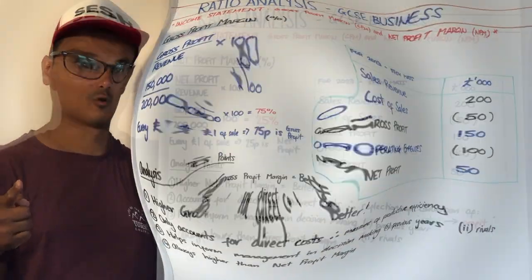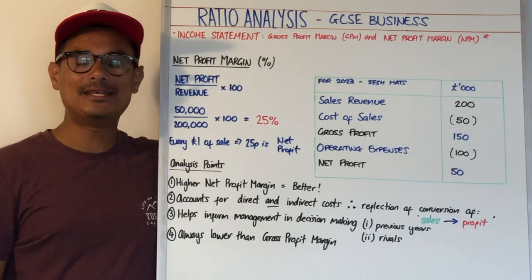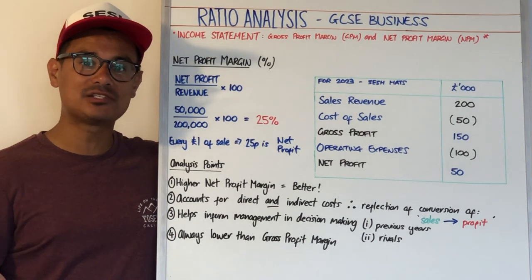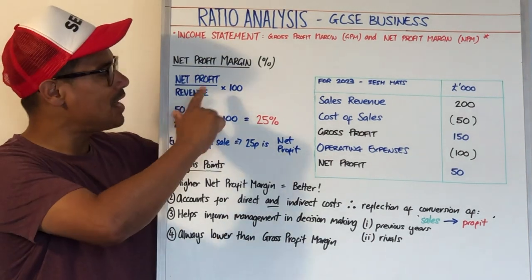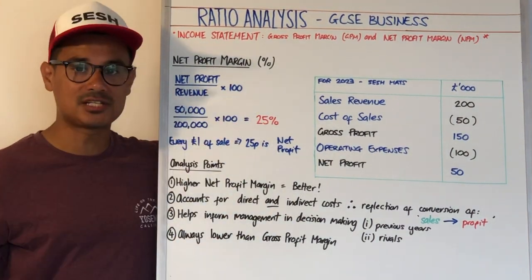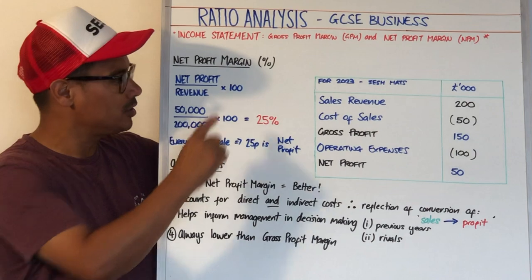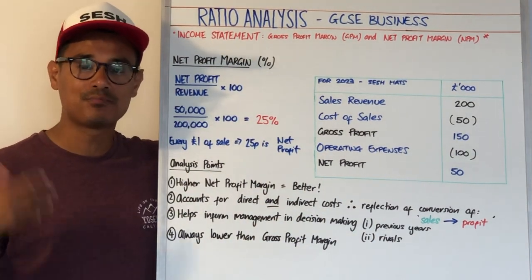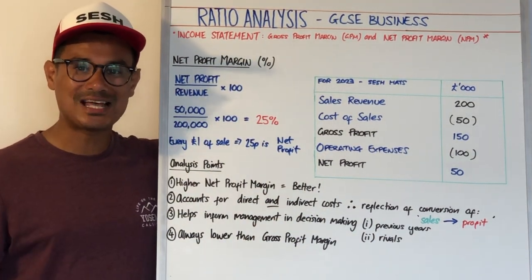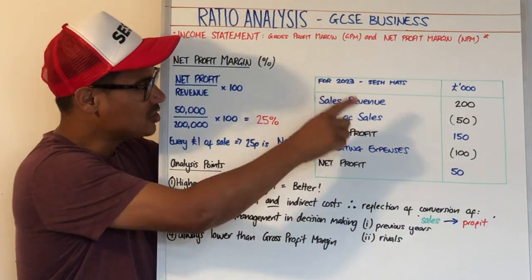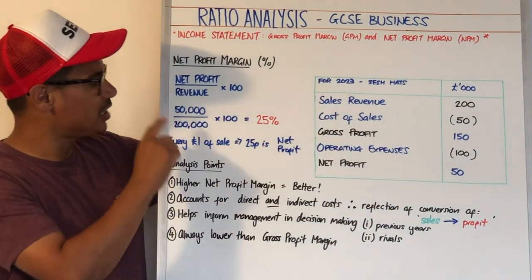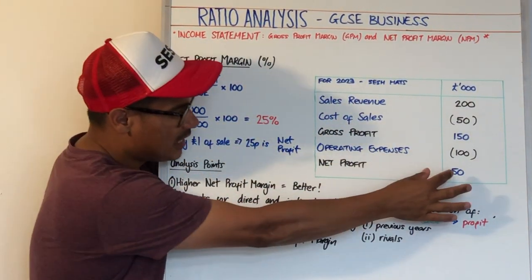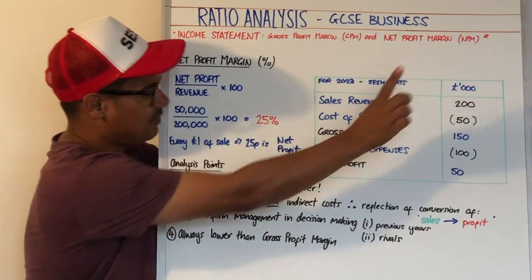Now let's look at net profit margin. The formula is net profit divided by revenue — the same thing as sales revenue — times by 100 because it's expressed as a percentage. Now let's use that same income statement — 2023 Seshat. So net profit, we'll find it there — £50,000.